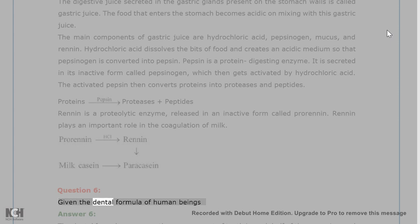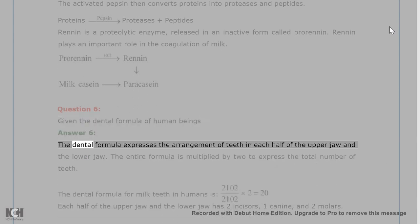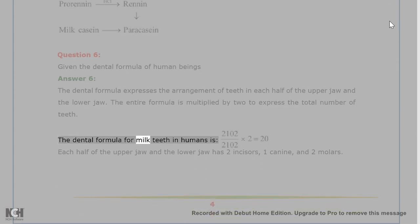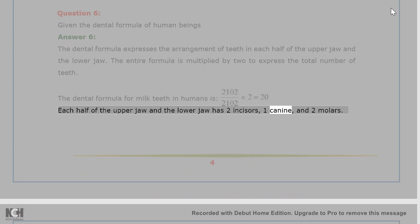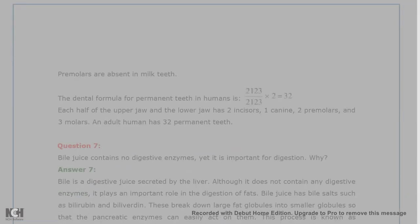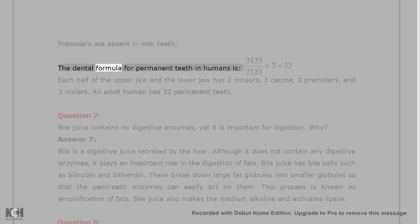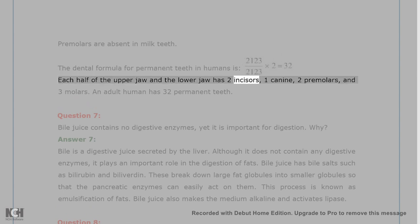Question 6. Give the dental formula of human beings. Answer 6. The dental formula expresses the arrangement of teeth in each half of the upper jaw and the lower jaw. The entire formula is multiplied by 2 to express the total number of teeth. The dental formula for milk teeth in humans is: each half of the upper jaw and the lower jaw has 2 incisors, 1 canine, and 2 molars. Premolars are absent in milk teeth. The dental formula for permanent teeth in humans is: each half of the upper jaw and the lower jaw has 2 incisors, 1 canine, 2 premolars, and 3 molars. An adult human has 32 permanent teeth.